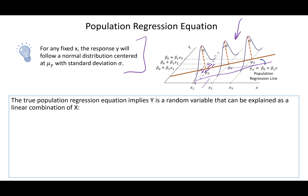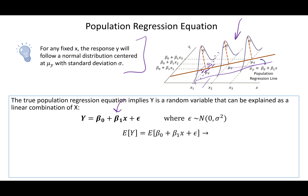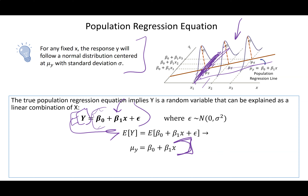This framework allows us to build the population line equation. The expected value of y equals how much y varies around the line — your y-intercept plus error. Error is how much the response fluctuates around that line.